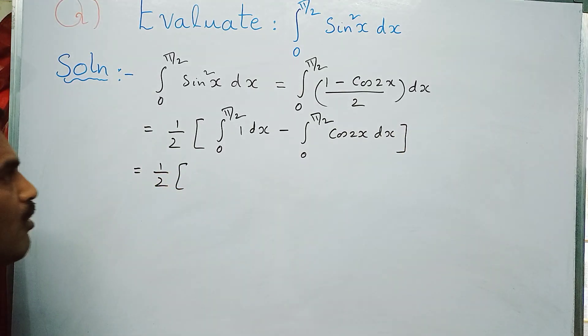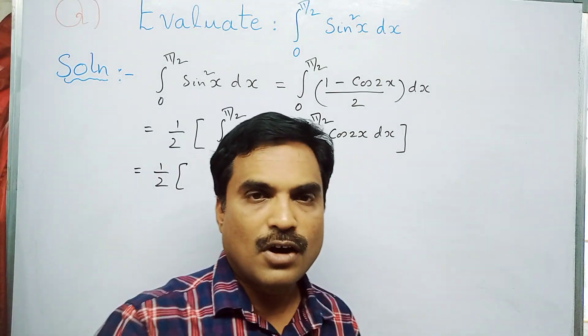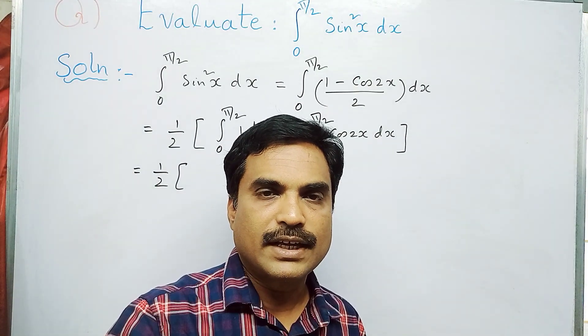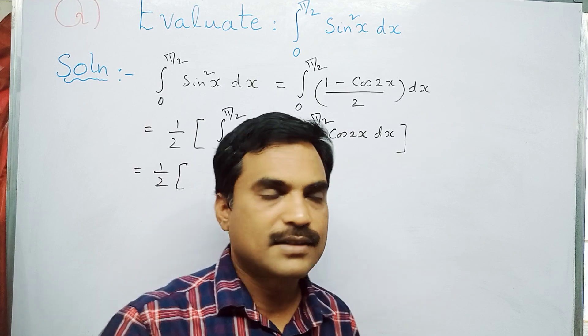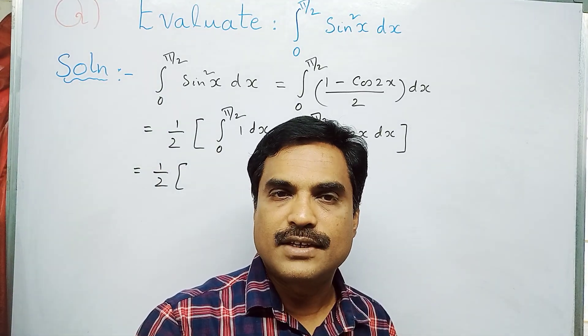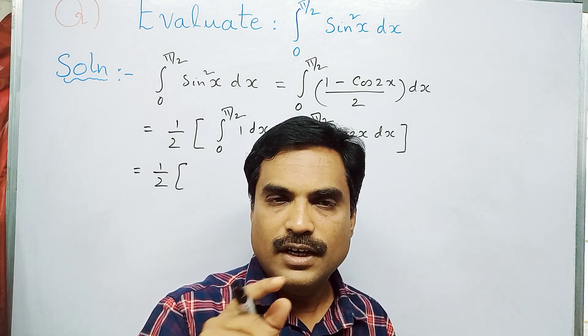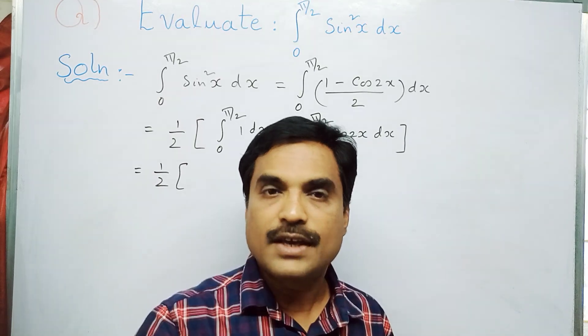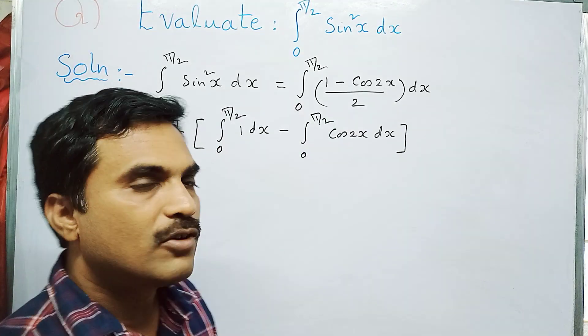Now apply two formulas: integral of 1 dx equals x, and integral of cos(ax) dx equals (1/a)sin(ax). Here a equals 2, so we get (1/2)sin2x. This gives us: 1/2[x from 0 to π/2 minus (1/2)sin2x from 0 to π/2].